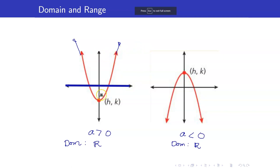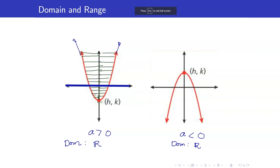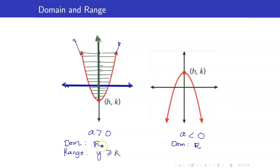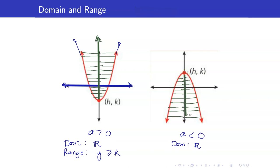For the range, we project along the y-axis to get the y-coordinates. When you continue this, you will cover everything from k upwards, and this will also extend indefinitely. So the range here is all y such that y is greater than or equal to k. If your graph is going downwards, you will cover from k downwards, so the range is y less than or equal to k.